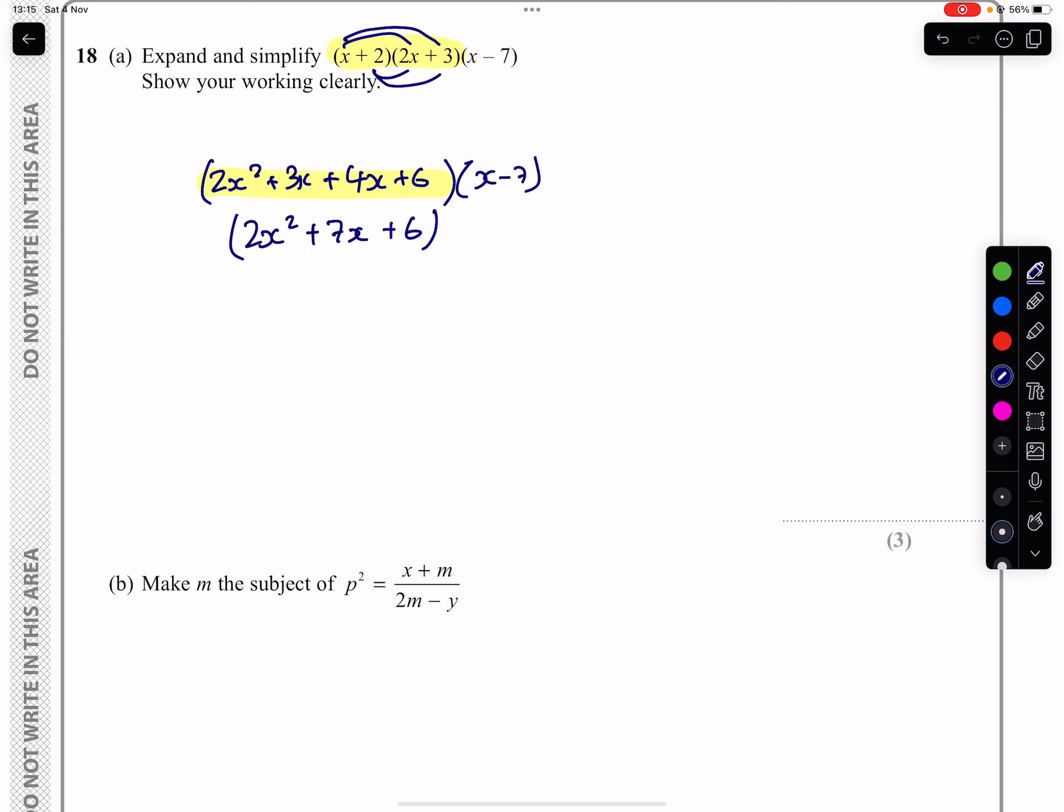I then have to multiply that bracket or expand it with the other one, x minus 7. So being careful as you multiply all of these, the two terms I'm multiplying together there will give us a 2x cubed minus a 14x squared. The two green terms I'm multiplying here will give us a plus 7x squared minus 49x. And then lastly, we've got a 6x, take away 42.